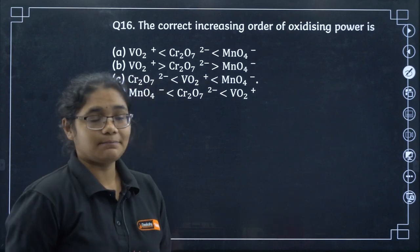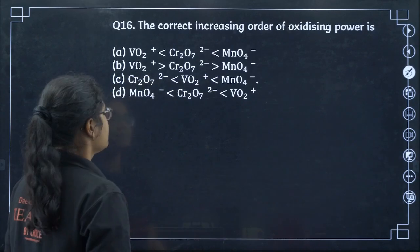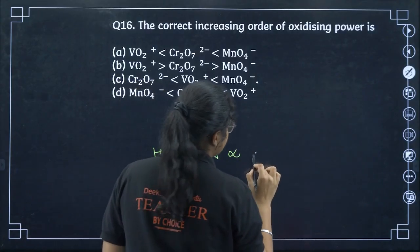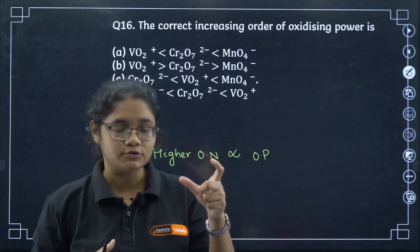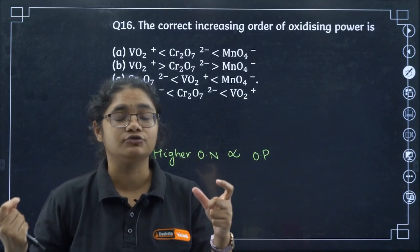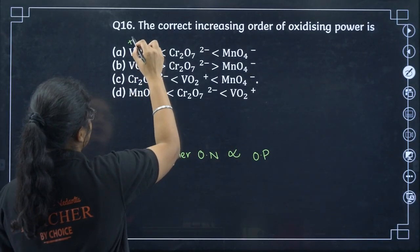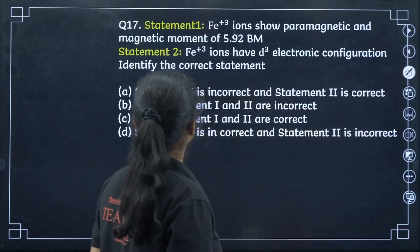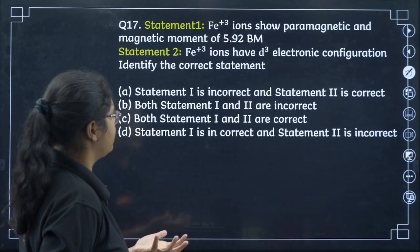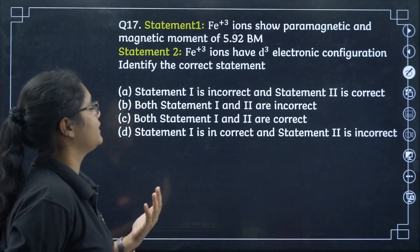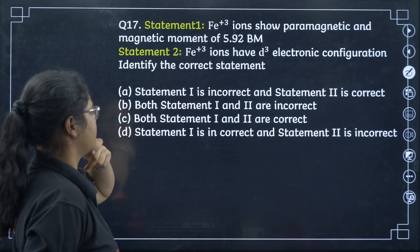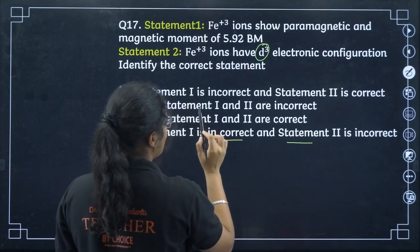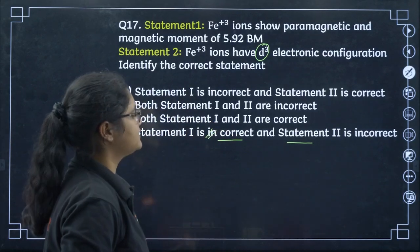The correct order of oxidizing power: higher the oxidation number, proportionally higher the oxidizing power — when an element gets reduced better, it behaves as a stronger oxidizing agent. With oxidation states of +3, +6, and +7 respectively, that gives option number A. Fe3+ shows paramagnetic behavior with a magnetic moment of 5.92 BM and has 5 unpaired electrons. However, Fe3+ has D5 configuration, not D3. So statement 1 is correct and statement 2 is incorrect — option D.